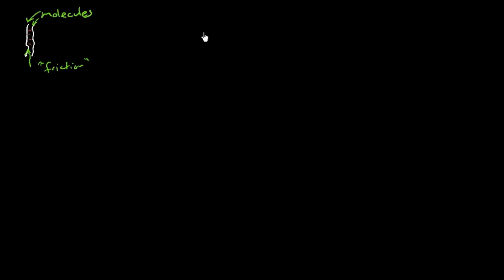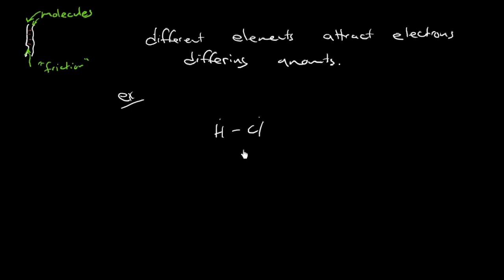And so what we need to understand first is that different elements attract electrons different amounts. So for example, if we had a molecule of HCl, we've got chlorine atom bonded to a hydrogen atom. And this solid line here, just the same as we've described over here, we said was a strong bond. This is a strong bond making up a molecule.